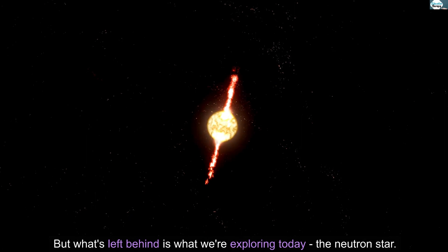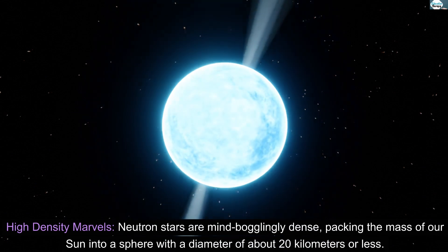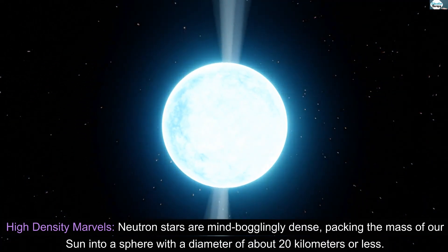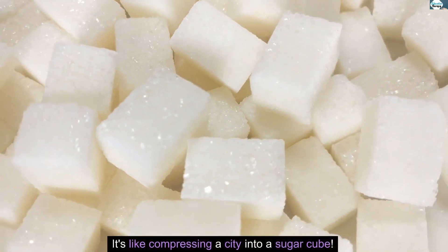High-density marvels. Neutron stars are mind-bogglingly dense, packing the mass of our sun into a sphere with a diameter of about 20 kilometers or less. It's like compressing a city into a sugar cube.